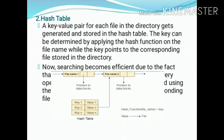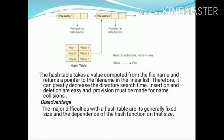Searching becomes efficient due to the fact that the entire list will not be searched on every operation. The hash table takes a value computed from the file name and returns a pointer to the file name in the linear list. Therefore, it can greatly decrease the directory search time.